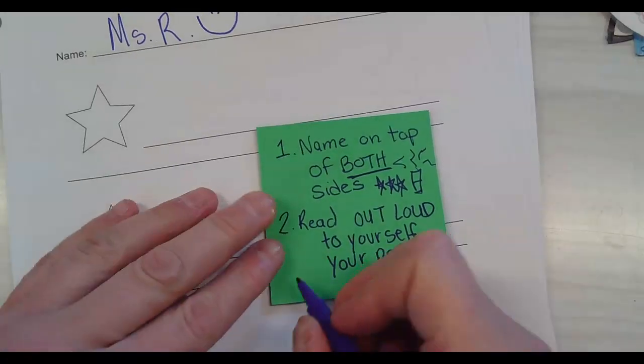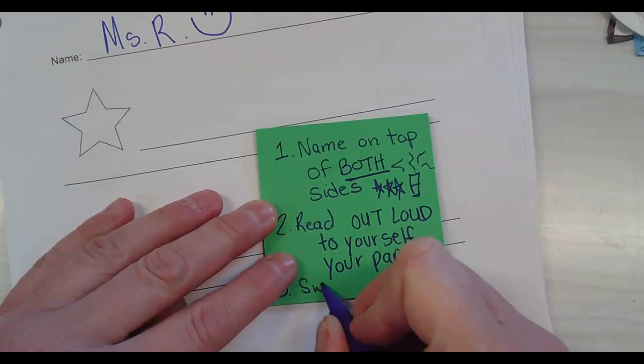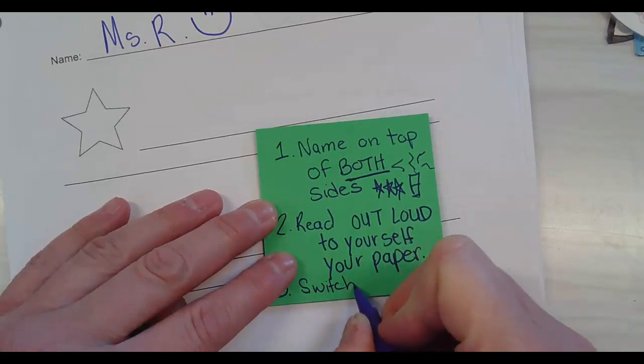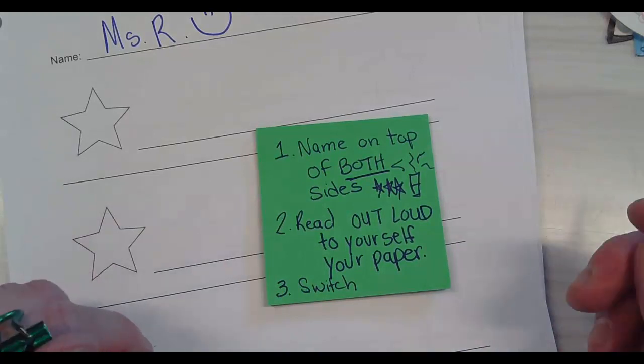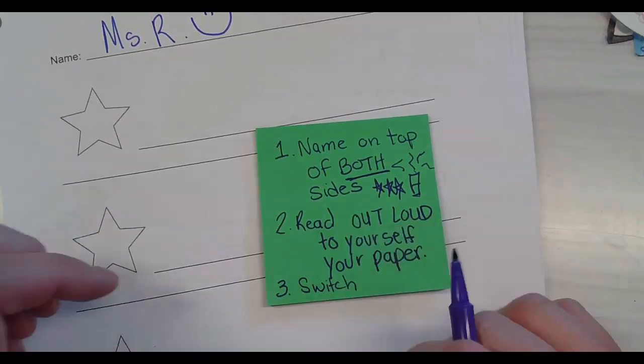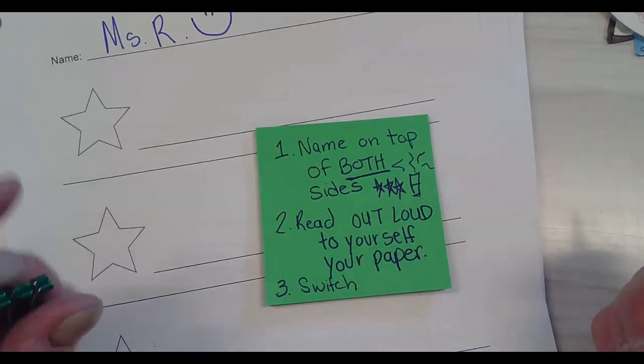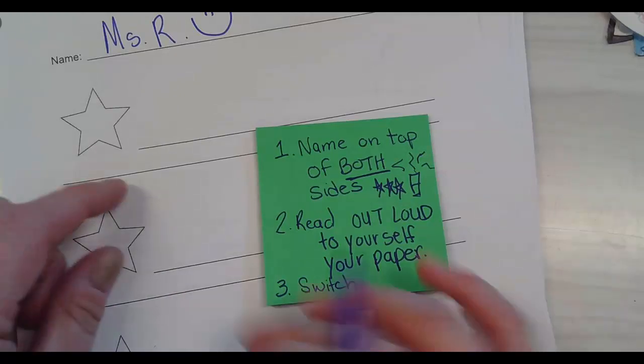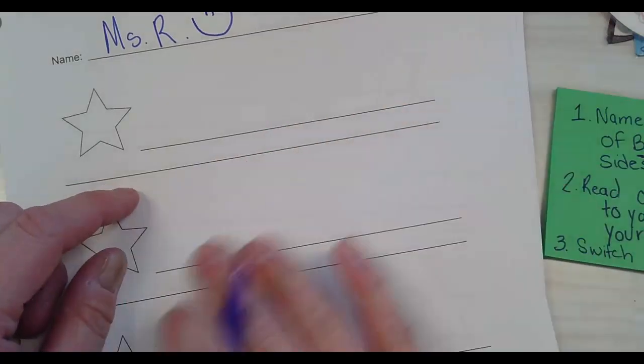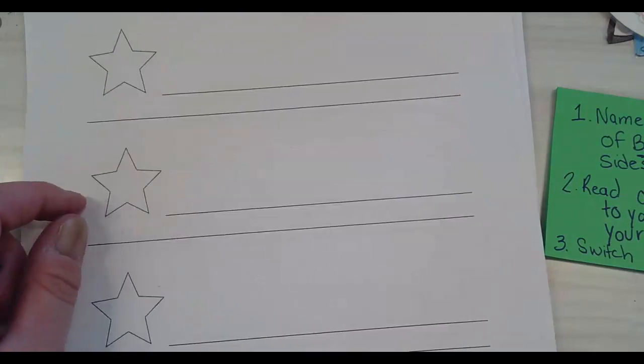Then job number three is switch with somebody else for their three stars and a wish. So maybe I pick Billy Bob for the first one, and Billy Bob reads my three stars and a wish, and he's like, Miss Richardson, I wish you would have talked more about what the living nativity really is, or I wish that you would da-da-da-da-da-da. So he says, I like the way you did this. I like the way you did that. I like the way you did that. And then he's like, I wish that you would, okay?